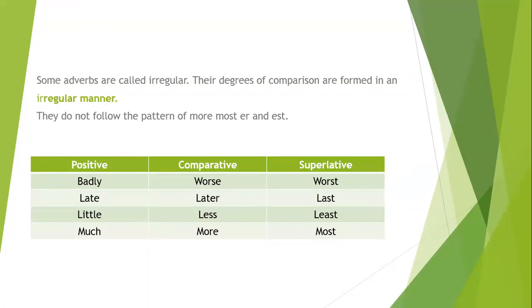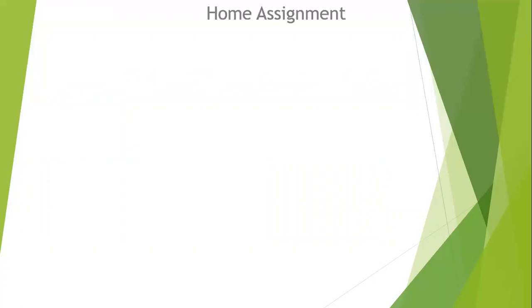That is why they are called irregular adverbs. The next word is 'late' — its comparative degree is 'later' and superlative degree is 'last'. Likewise, 'little' is the positive degree, its comparative degree is 'less' and superlative degree is 'least'. Next, 'much' is the positive adverb, its comparative degree is 'more' and superlative degree is 'most'. I hope you have understood all of this.